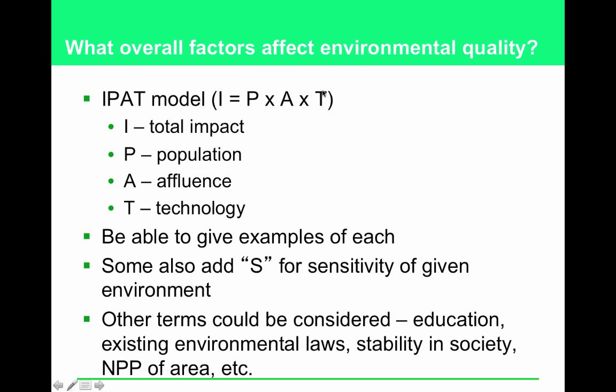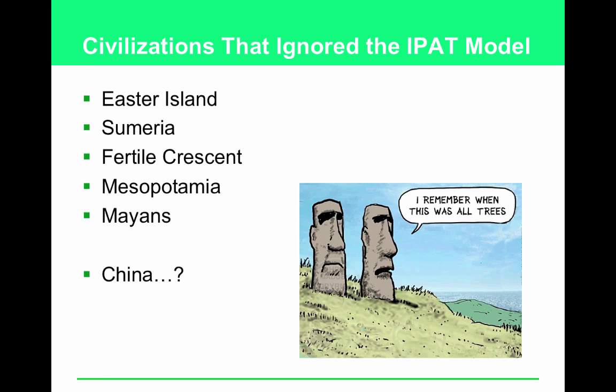Other terms that could be considered in IPAT include the general education of the population, existing environmental laws, and stability in the society — people who are going to war are not focused on conserving the environment; they may actually degrade it to keep the enemy from benefiting from that resource. NPP — the net primary productivity of that area, how many trees and plants are there — is also a factor.